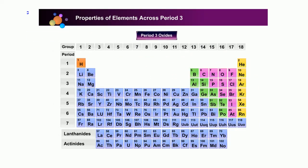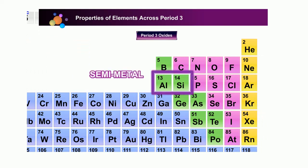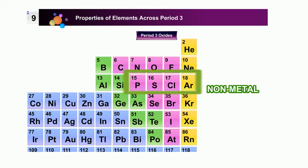The metallic nature of the elements across period 3 changes from metal to semi-metal to non-metal.